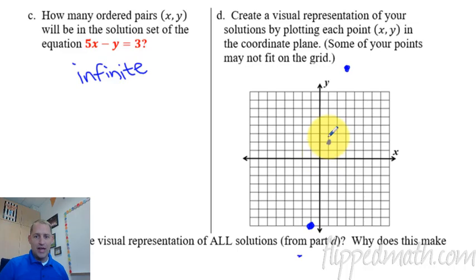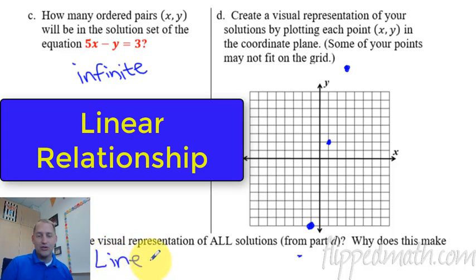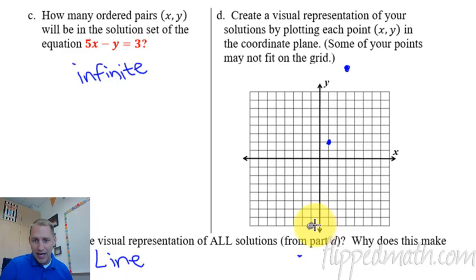Okay, so here we have just some random different points. But you can see they're all kind of forming a pattern here. So this goes to letter E. What is the visual representation of all the solutions from part D? So it is a line. In fact, let's go ahead and create that line. Try and just make it as straight as possible if you can. You might need a straight edge or something.